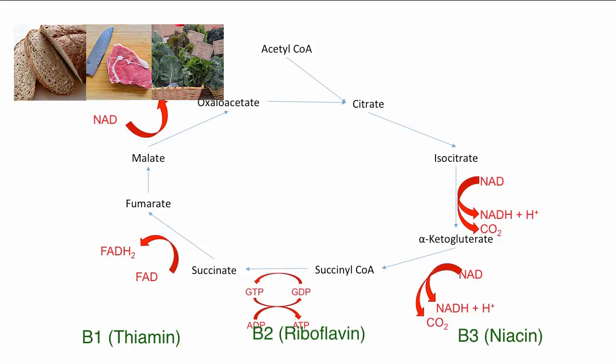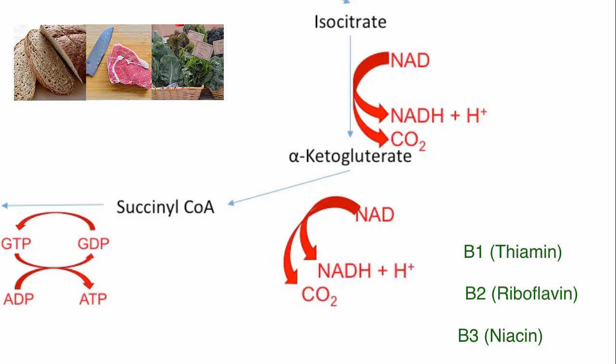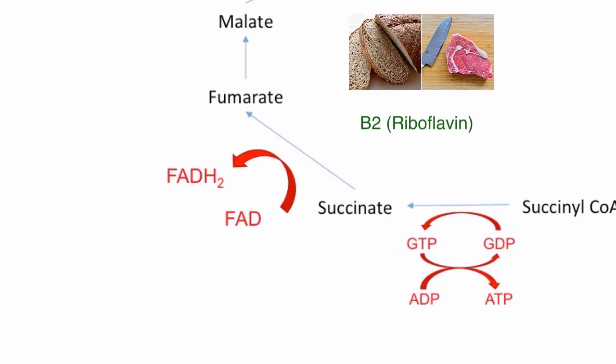Another reaction where the same three B vitamins are used is the conversion of alpha-ketoglutarate into succinyl-CoA. Vitamin B2 or riboflavin is used once more in the reaction that creates FADH2.